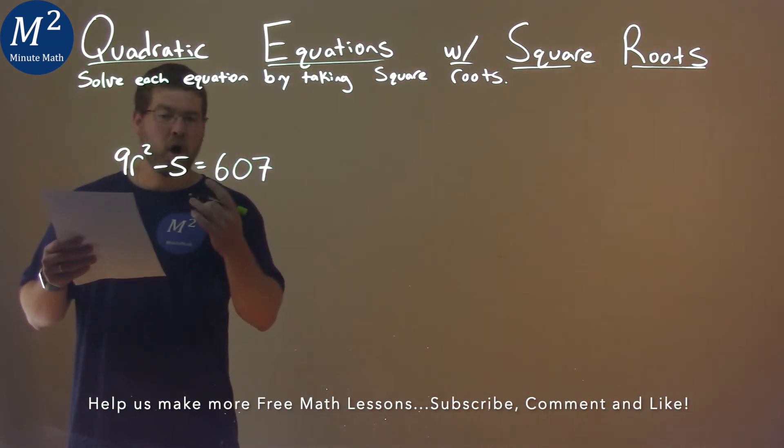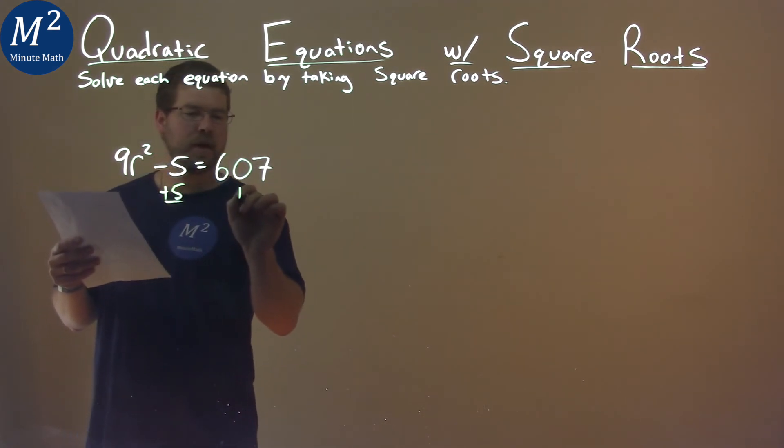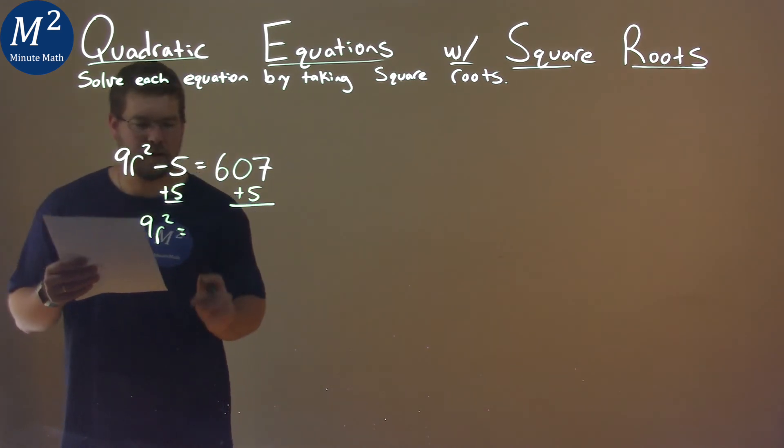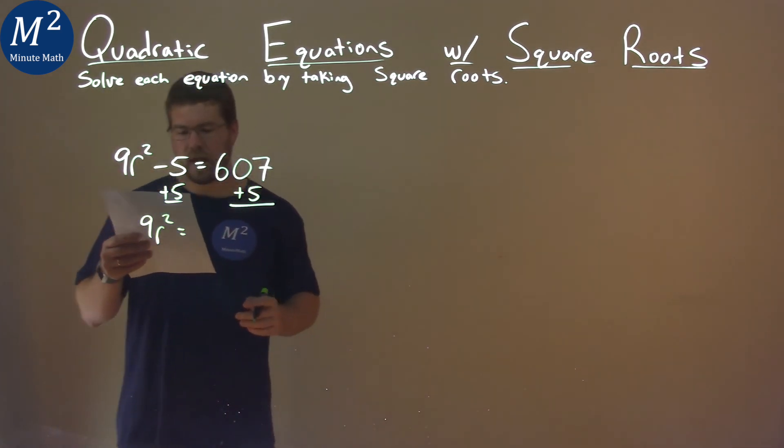I want to get an r by itself. So I want to add 5 to both sides, and then we have 9r squared here equals 607 plus 5 is 612.